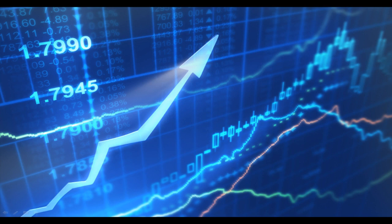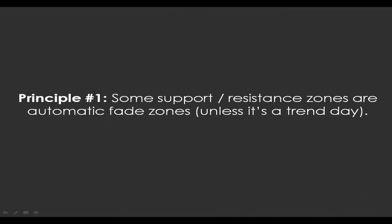There are nine principles, so let's get started. Principle number one: some support and resistance zones are automatic fade zones, unless it's a trend day. The first principle tells you that some support and resistance zones are so important that you're automatically going to fade them. Fade means you sell at resistance or you buy at support.